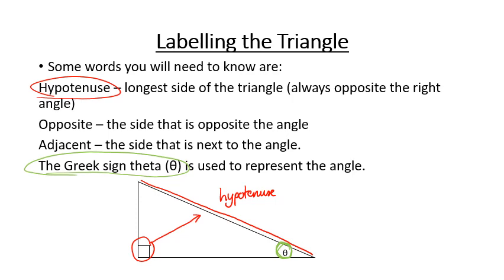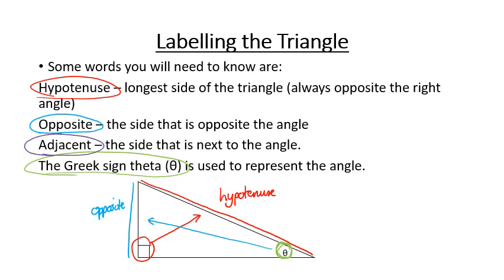After labelling theta, we can label our opposite — the side that is opposite the angle theta. And our adjacent is the side that is next to theta, which is this side here.